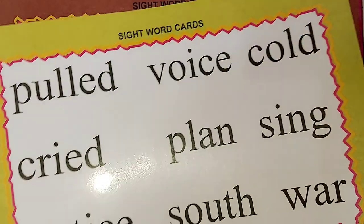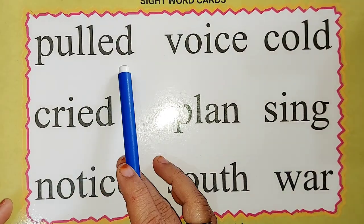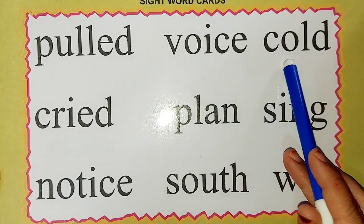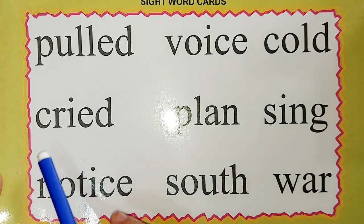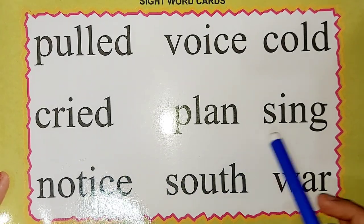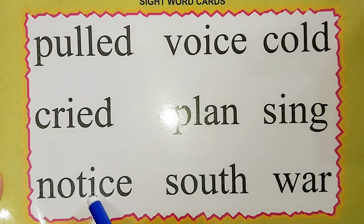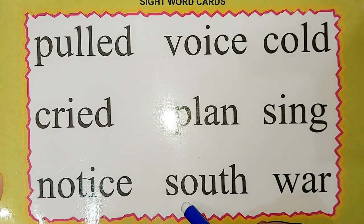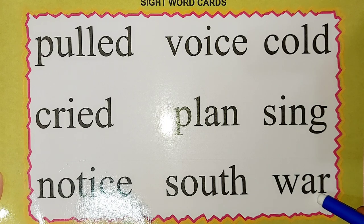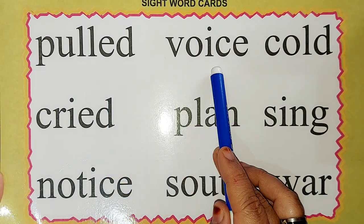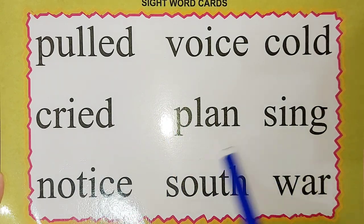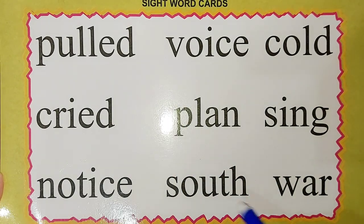The next word is P-U-L-L-E-D: pulled. V-O-I-C-E: voice. C-O-L-D: cold. C-R-I-E-D: cried. P-L-A-N: plan. S-I-N-G: sink. N-O-T-I-C-E: notice. S-O-U-T-H: south. W-A-R: war. Once again: pulled, voice, cold, cried, plan, sink, notice, south, war.